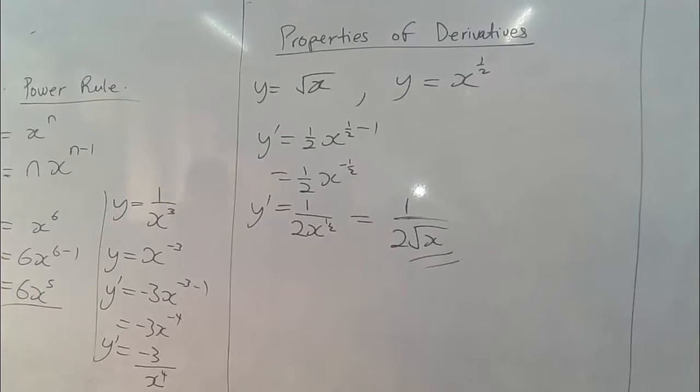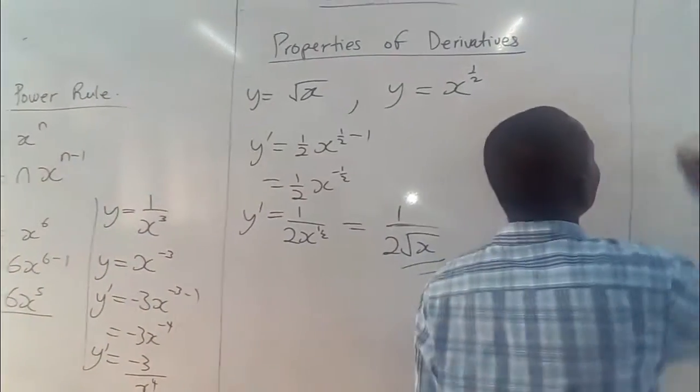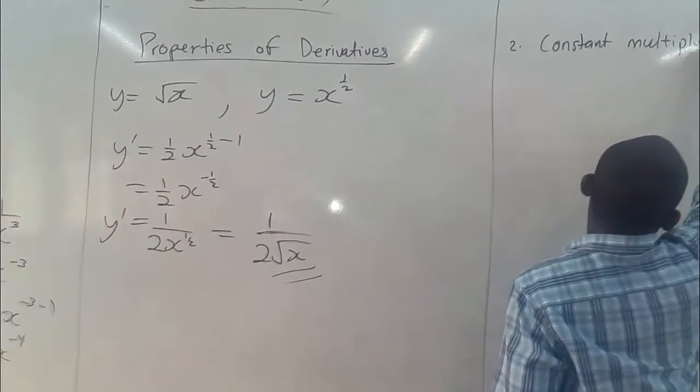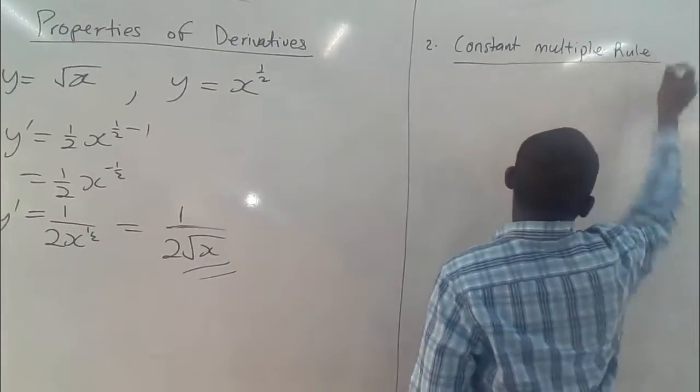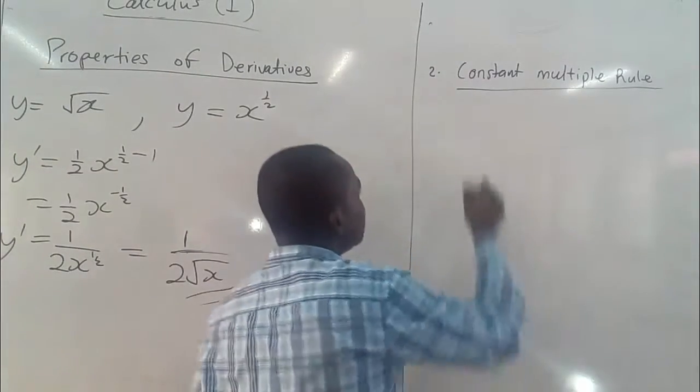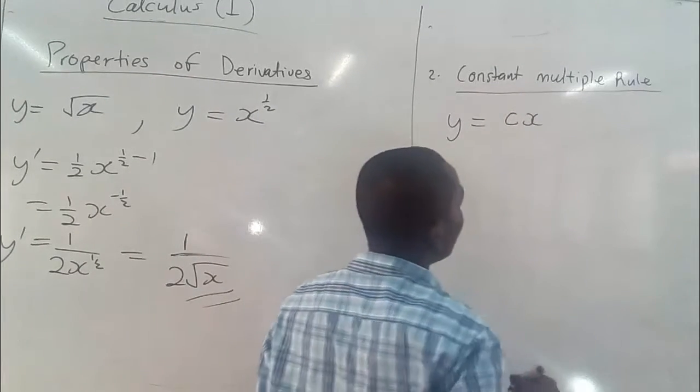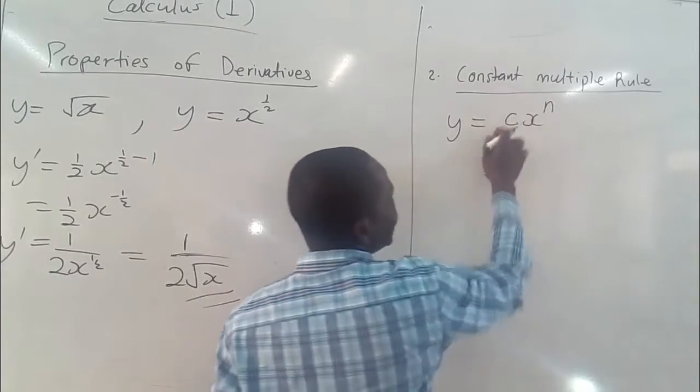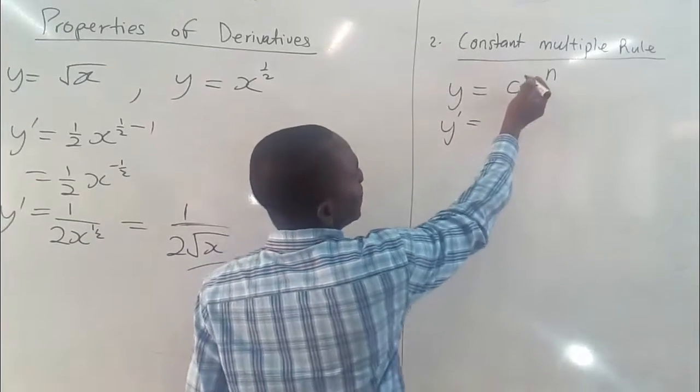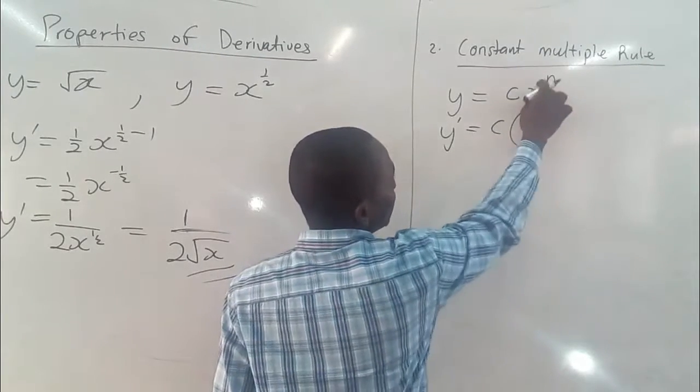Now let's talk about the second property that we can think of. We call that the Constant Multiple Rule. This tells us that when we have a function with a constant, let's say we have y to be equal to cx to the power n, when c is a constant, we get our derivative by separating the constant out, then we differentiate the value of x here.